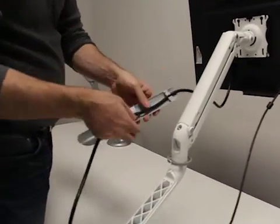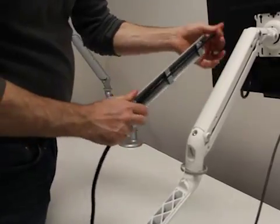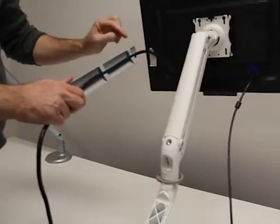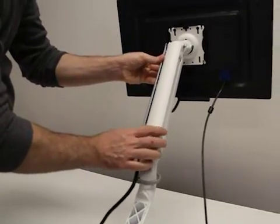Once you have your side shrouds, snap your cables into the slot. Then allow a little bit of slack from the front of the cable manager to the monitor and snap it in place.